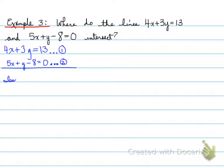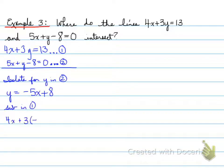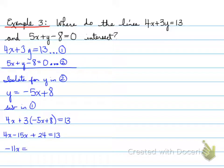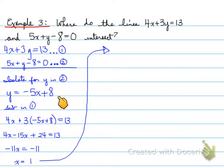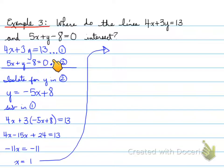We're going to isolate for y in equation number two. We do the following: plug it in, isolate for y in 2, sub in 1, expand it out. I left the y where it was because it was already positive. Move the 5x over, move the minus 8 over — we get y equals negative 5x plus 8.